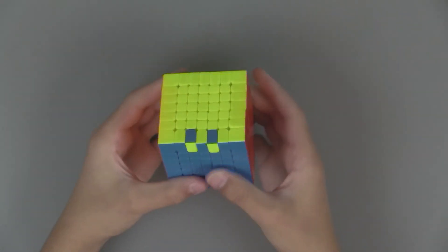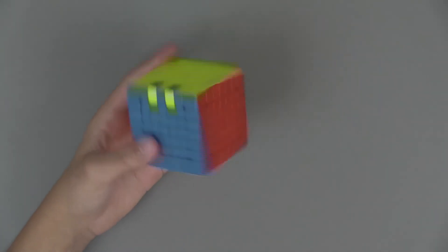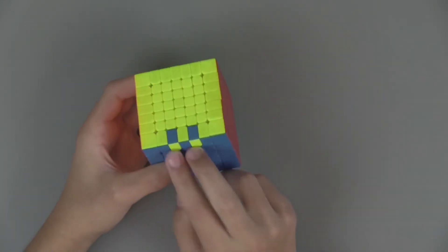Now onto 7x7. There is literally just two edge parities and it looks quite cool if that's all you've got left, just these two are flipped.